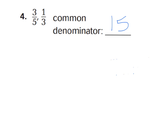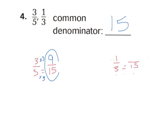So 3 fifths equals how many fifteenths? And 1 third equals how many fifteenths? If you multiply 5 times 3 to get 15, then 3 times 3 would be 9, so 9 fifteenths is your first answer. And for 1 third, you multiply 3 times 5 to get 15, so 1 times 5 is 5. So the equivalent fraction for 3 fifths is 9 fifteenths, and for 1 third it is 5 fifteenths.